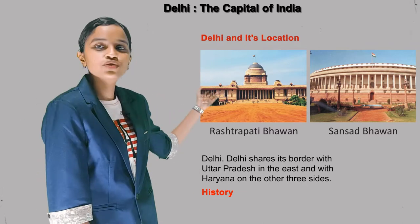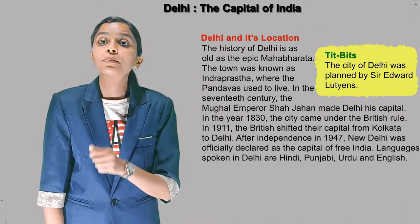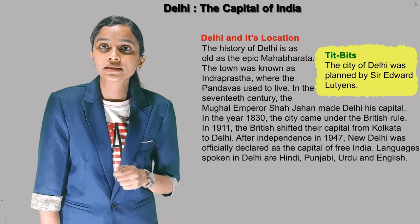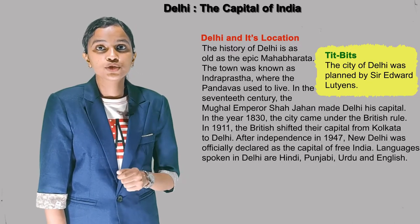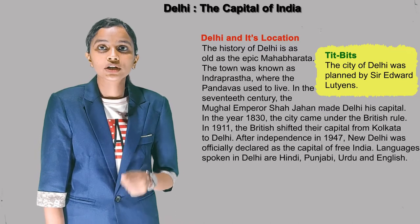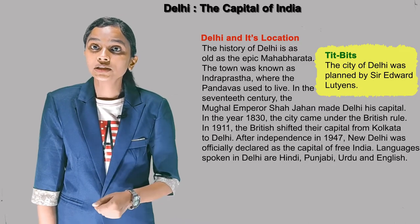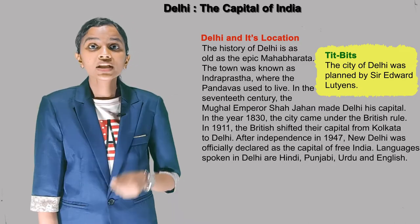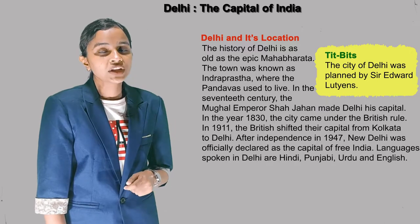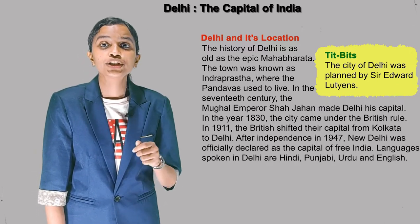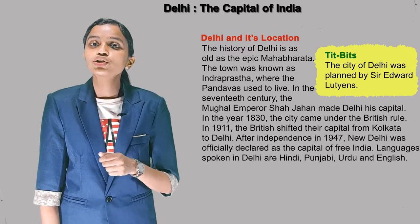The history of Delhi is as old as the epic Mahabharata. The town was known as Indraprastha where the Pandavas used to live. In the 7th century, the Mughal Emperor Shah Jahan made Delhi his capital in the year 1830. The city came under British rule in 1911. The British shifted their capital from Kolkata to Delhi. After independence in 1947, New Delhi was officially declared as the capital of free India.